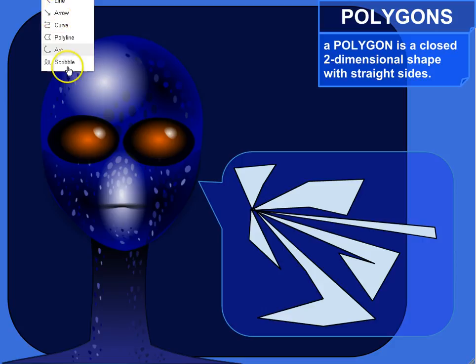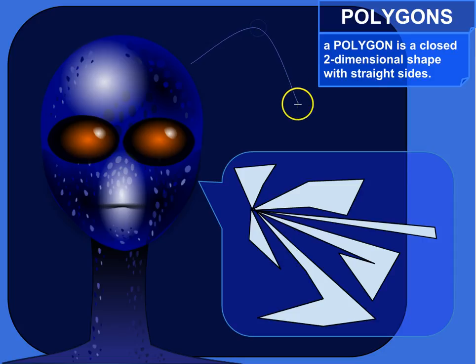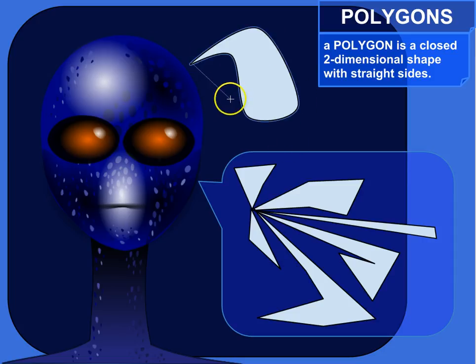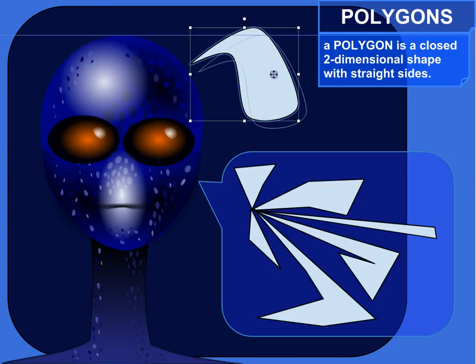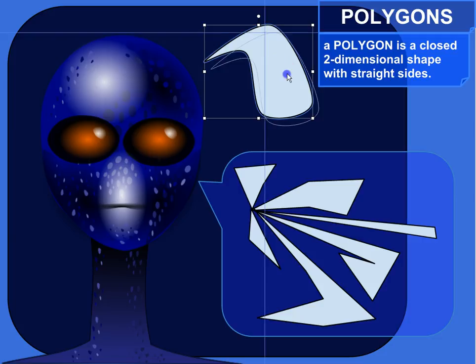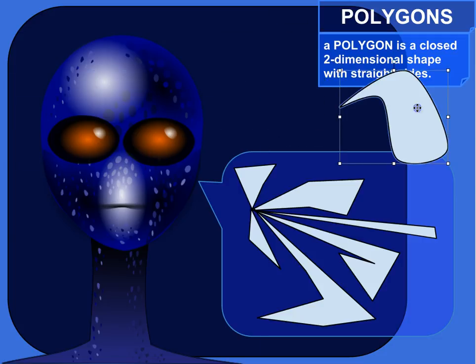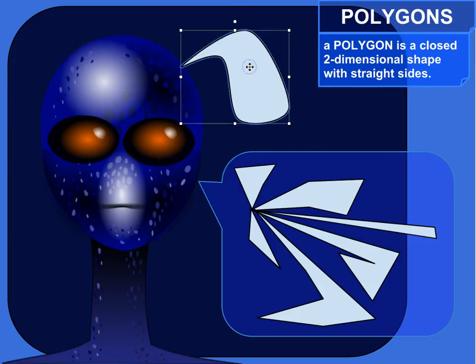Let me give you some examples of non-polygons. Let's see. That is not a polygon. It's a closed shape and it's two-dimensional, but it doesn't have straight sides.